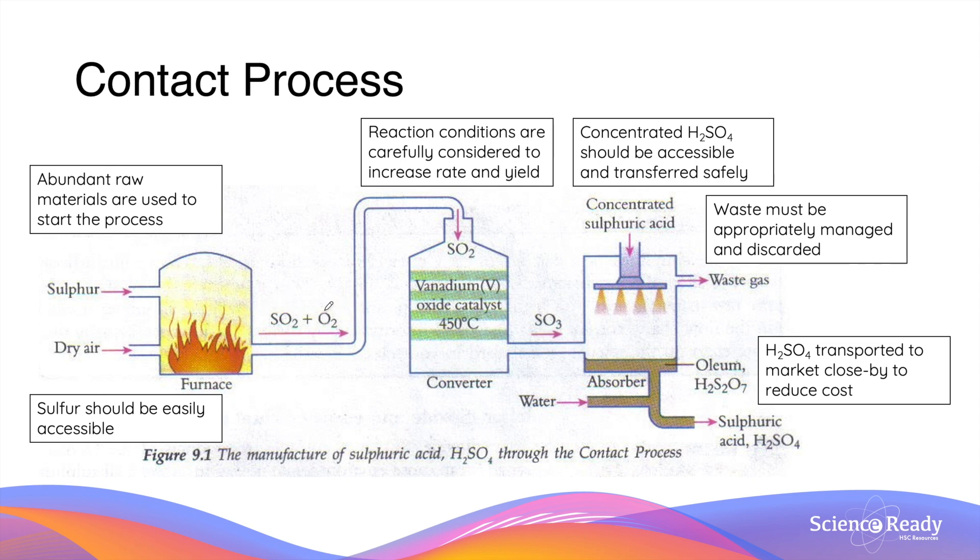The sulfur dioxide that is produced from the first reaction then reacts with oxygen to form sulfur trioxide. This takes place in a second reaction chamber that uses vanadium-5 oxide as a catalyst. This catalyst is important as it accelerates the reaction and allows a faster reaction to take place at a lower temperature.